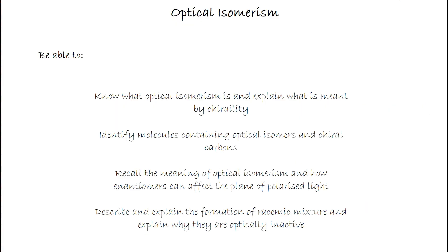At the end of this lesson you should be able to know what optical isomerism is and explain what is meant by chirality. You should be able to identify and draw molecules that are optically active and contain chiral carbons. You should be able to recall the meaning of optical isomerism and how enantiomers can affect the plane of polarised light, and describe and explain the formation of racemic mixtures and explain why they are optically inactive. That's all for now — I look forward to seeing you next time.